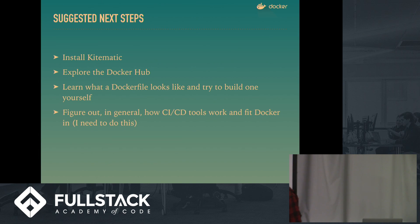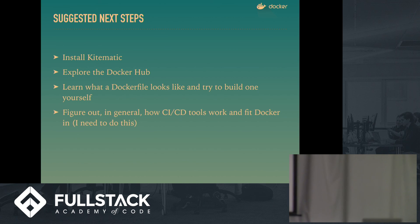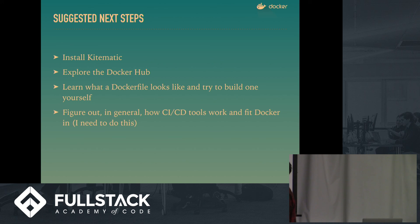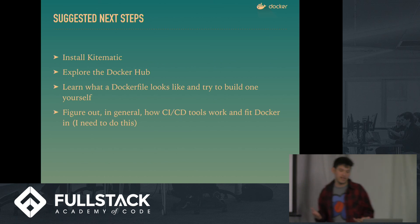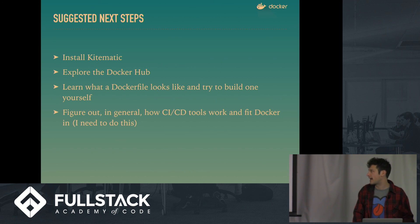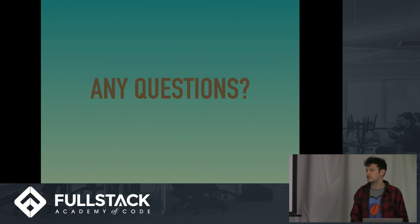Some other things you might want to try: install Kitematic — I'm not sure how you say it — it's basically Postico for Docker, a GUI way to look at all the containers you have. It's easy to do that with 'docker ps' in the command line, but this looks a lot nicer. Definitely explore Docker Hub to see what images are out there. Learn what a Dockerfile looks like and try to build one yourself — it's not as hard as it sounds, it's basically how you build a Docker image. And look into how Docker works with deployment and integration. Thank you.